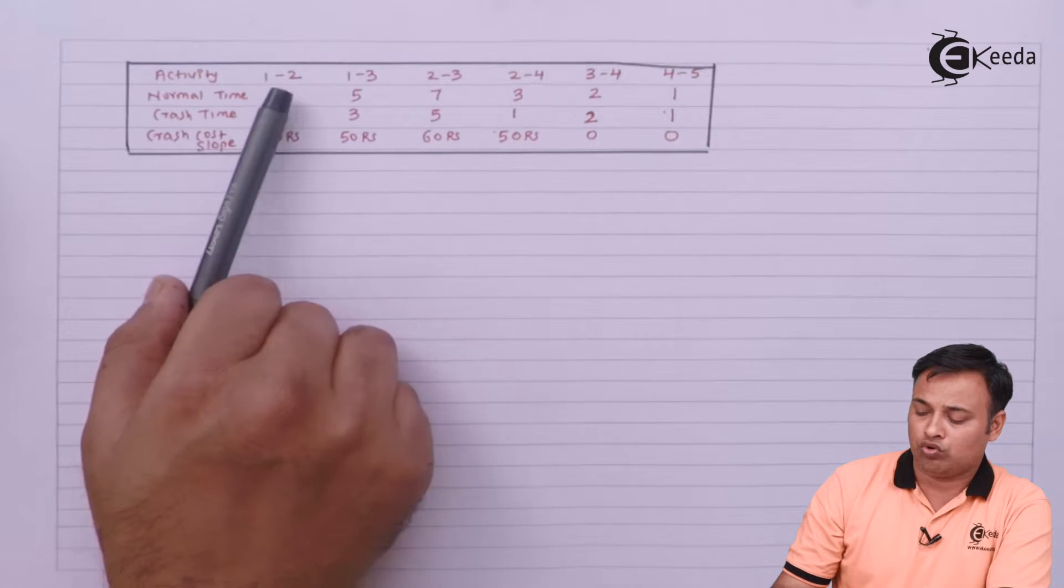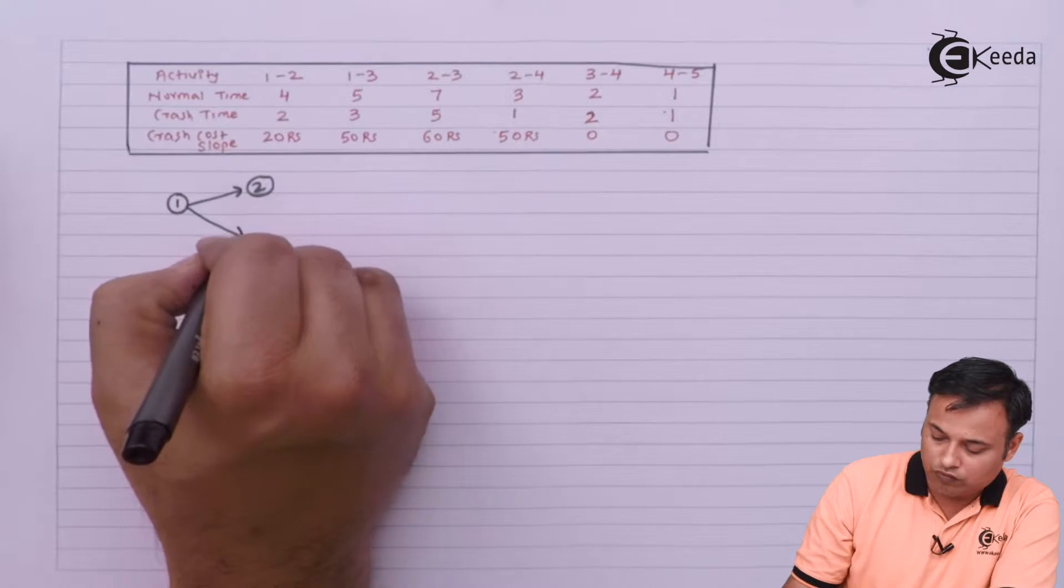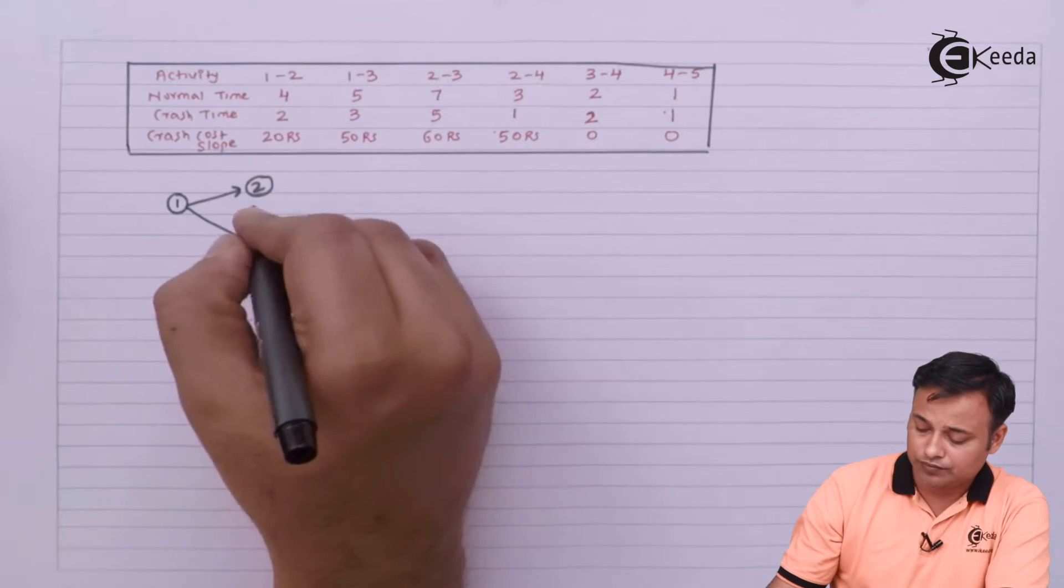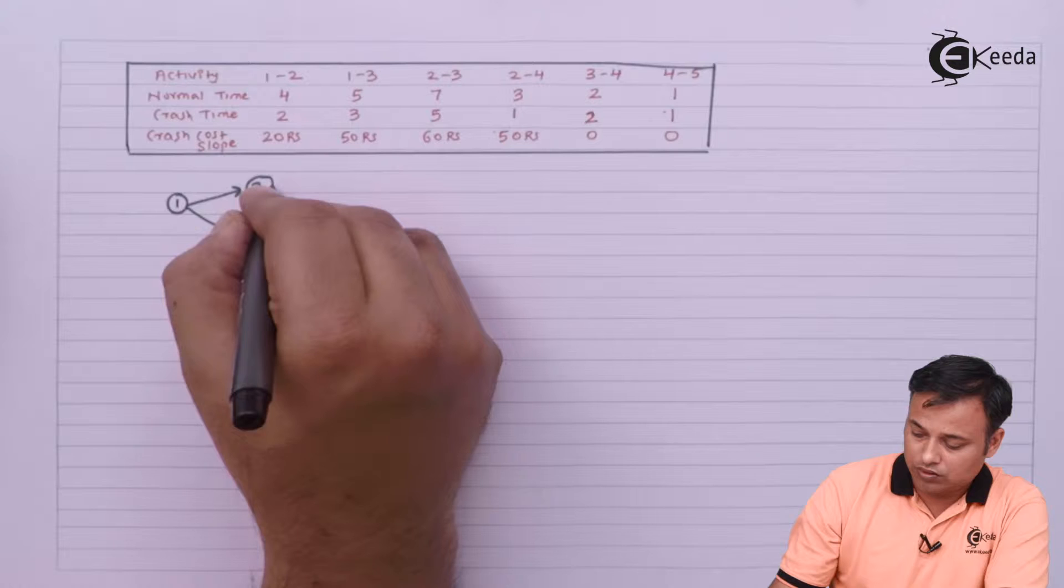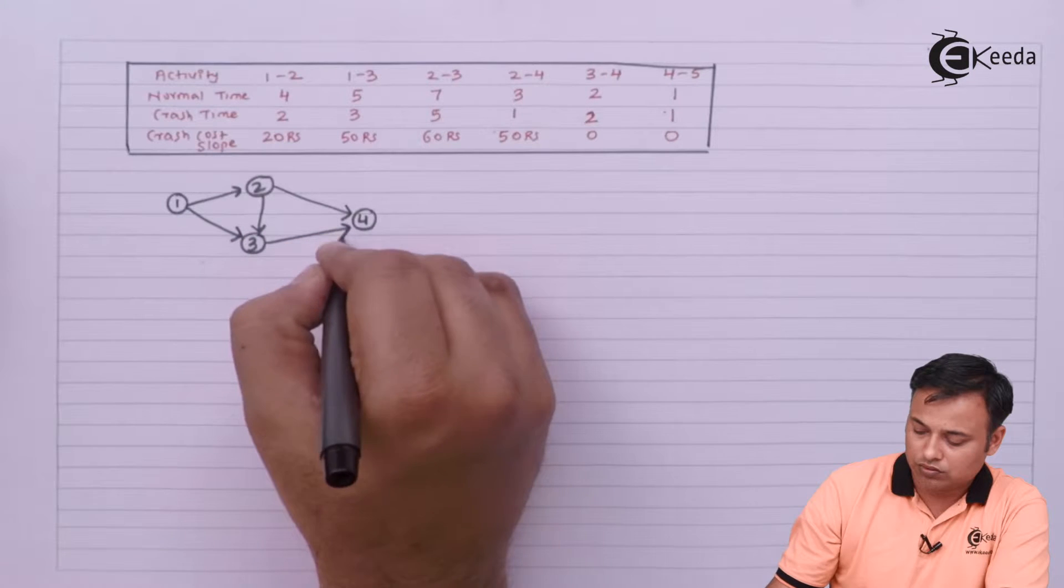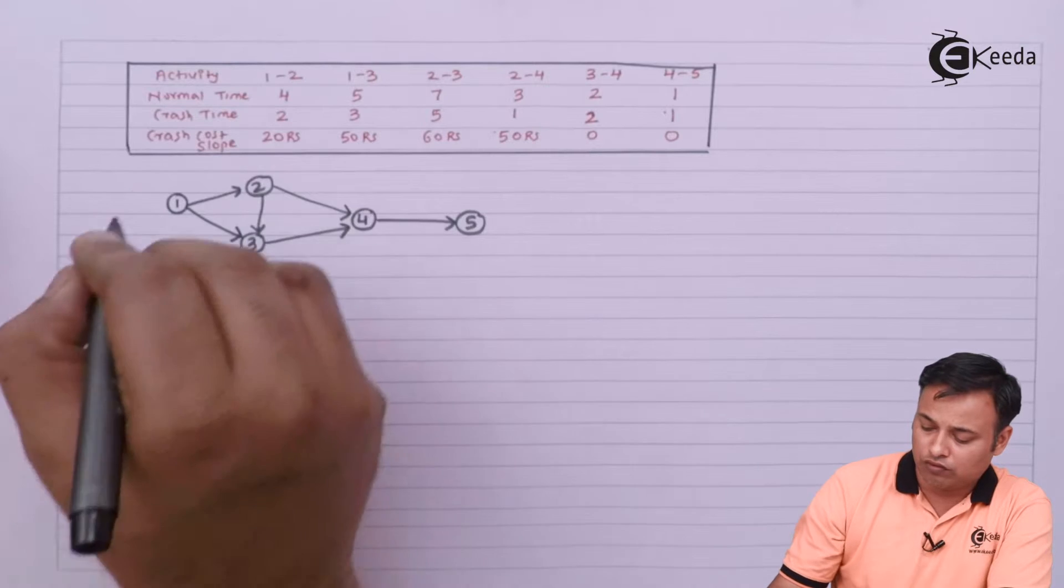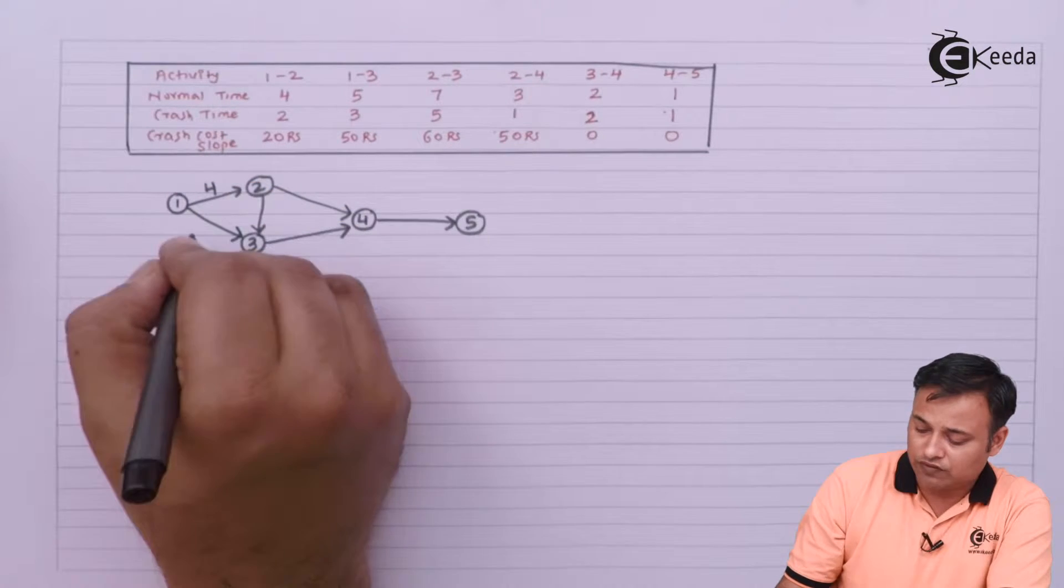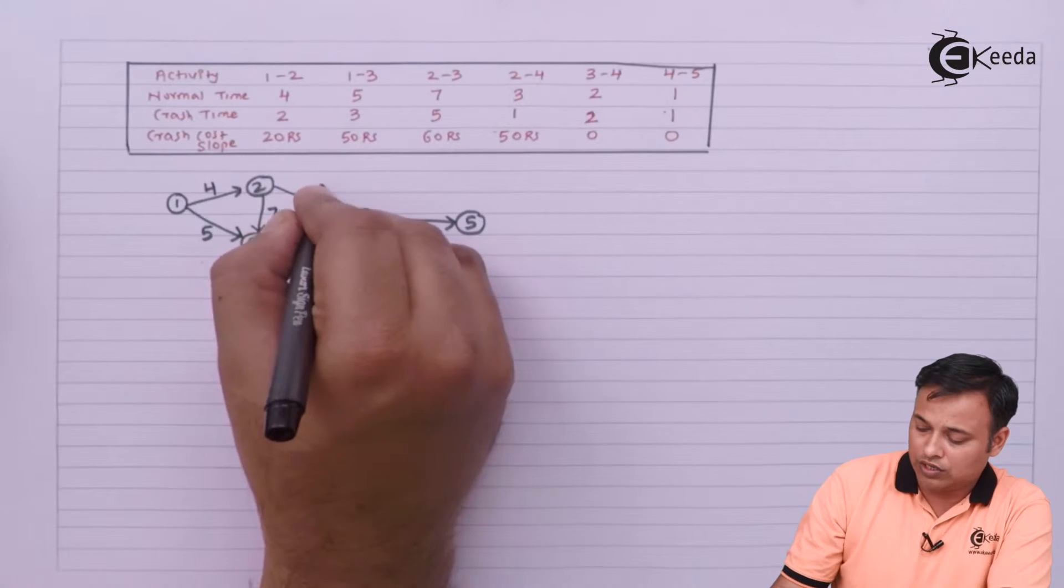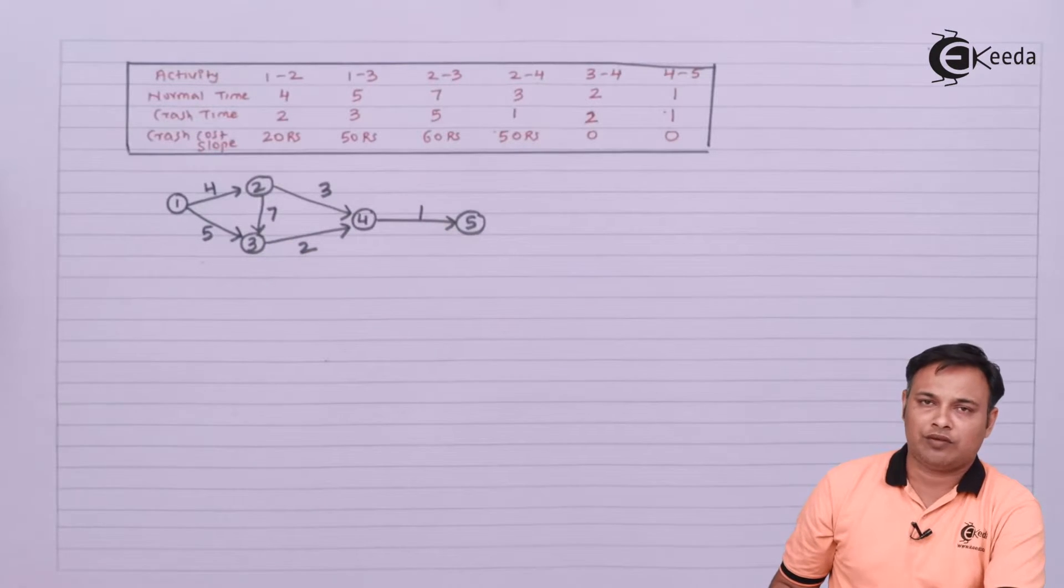We have activities 1-2 with values 4, then 1-2-3 with 5, next 2-2-3 with 7, then 2-2-4 with 3, followed by 3-2-4 with 2, and 4-2-5 will be 1. The normal times are: 1-2-2 is 4, 1-2-3 is 5, 2-2-3 is 7, 2-2-4 is 3, 3-2-4 is 2, and 4-2-5 will be 1.